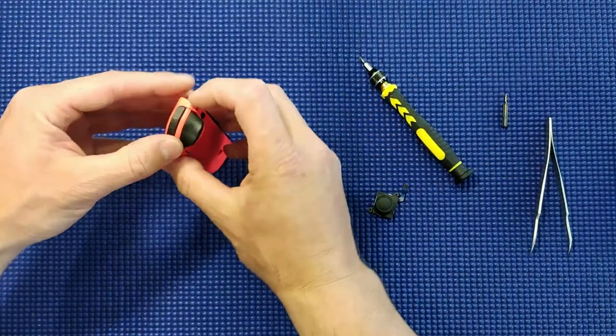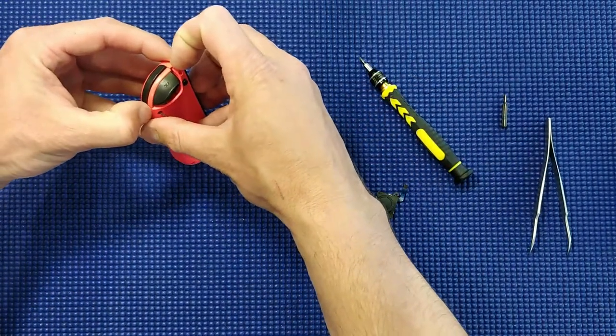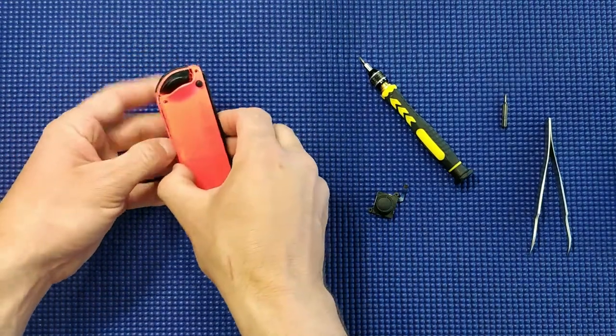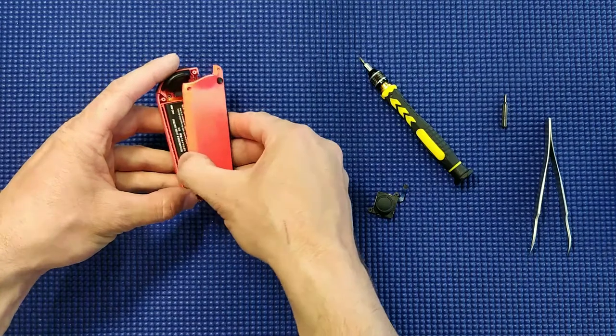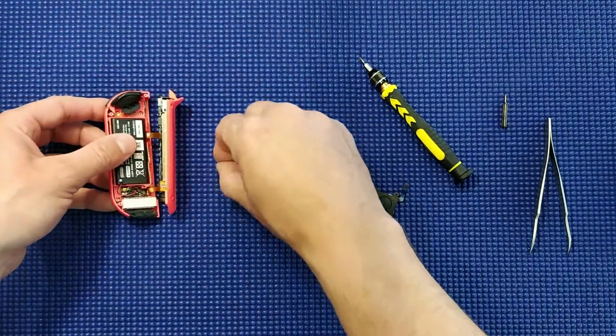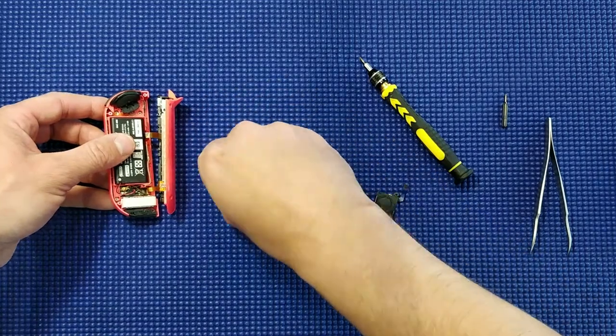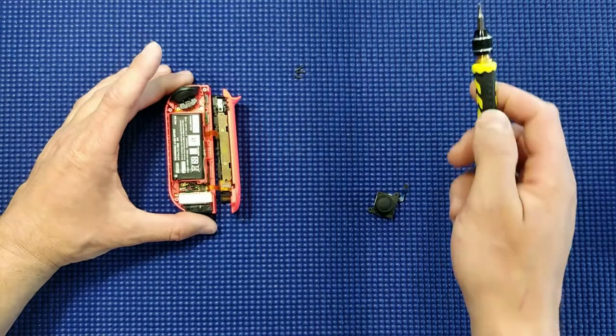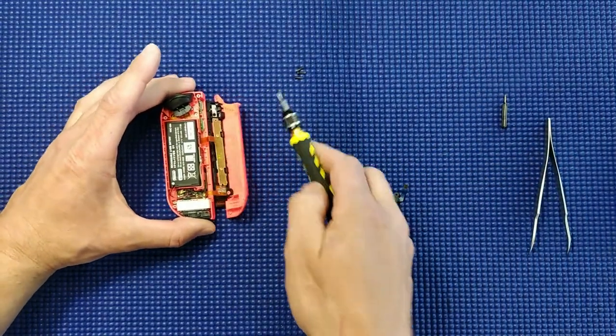After that you open the controller. Pay attention that in the side of the controller there are two ribbon cables, so open it carefully. Put it like this. We wouldn't disconnect the battery or anything because as I told it's a really quick fix, so we'll leave it like this. Only don't play with the screwdriver where the contacts are.